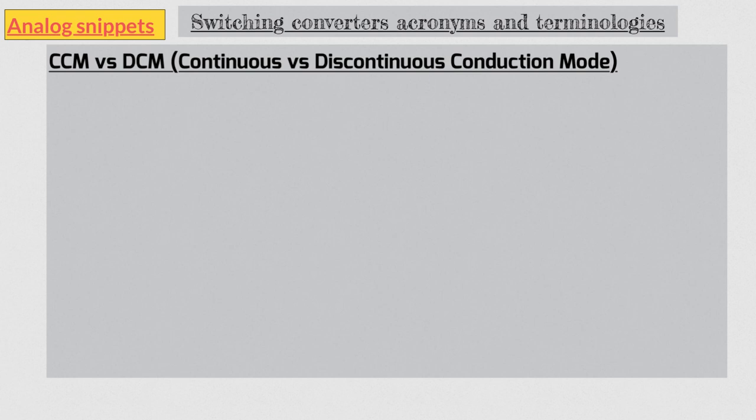Our next topic is continuous versus discontinuous conduction mode. One of the most important signals in switching converters is inductor current. And you are probably already aware of the ramping up and ramping down nature of the inductor current. This is an example of inductor current in CCM operation. This inductor current waveform is continuous in the sense that it is either always ramping up or ramping down. There is no duration when this current is zero or flat. When the load current increases this whole waveform moves up, and when the load decreases this comes down.